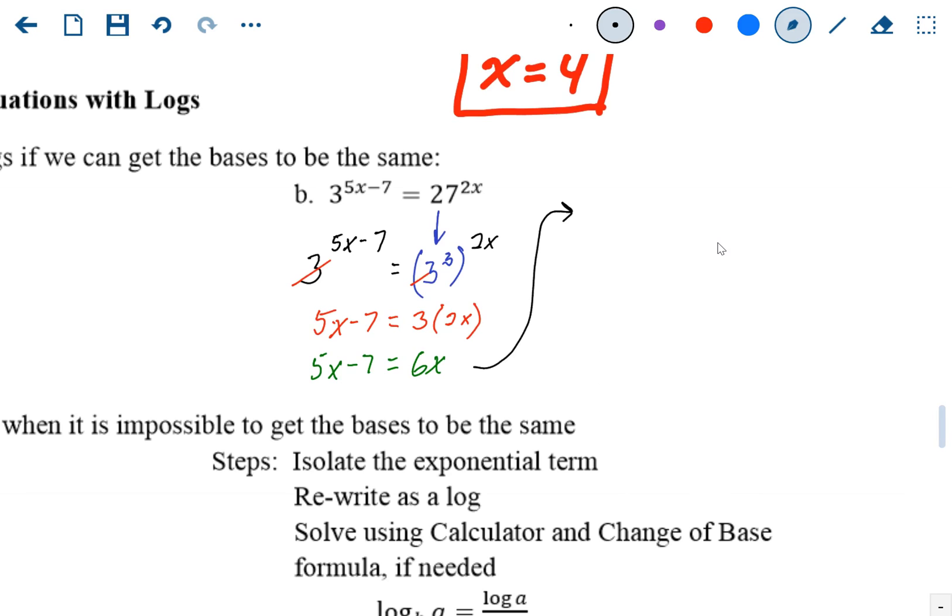We could subtract the 5x over. It's going to leave us with negative 7 on the left equals 1x on the right, so x equals negative 7. So again, we were able to solve those because we could just make the base become the smaller version of it.